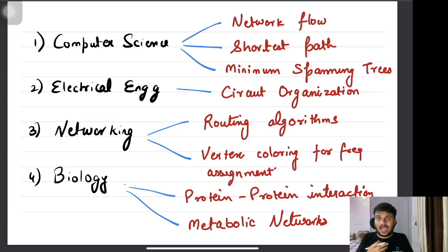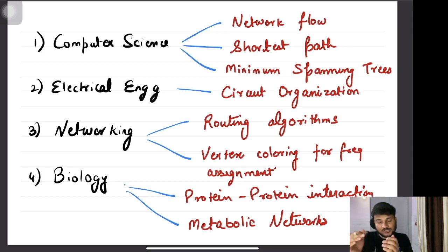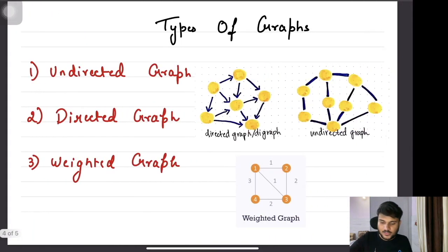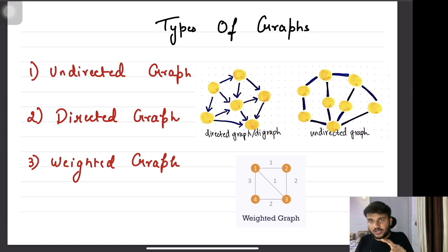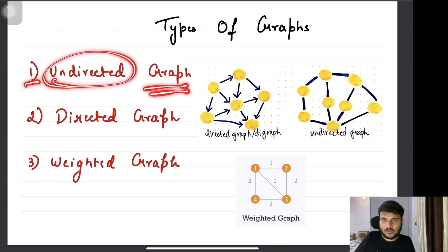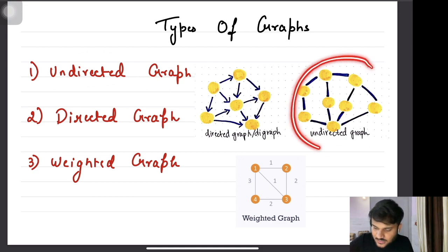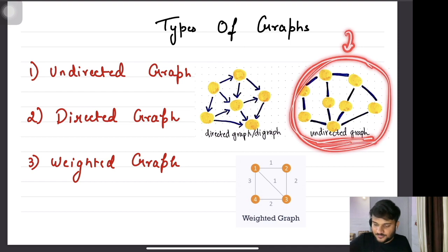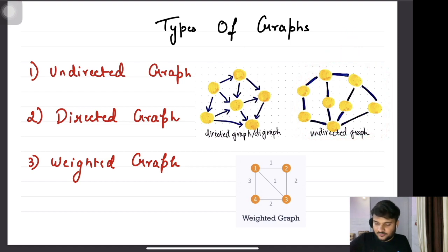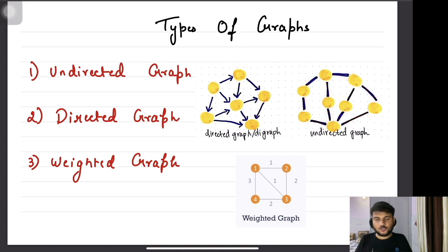Now let's talk about some different types of graphs, and then we will see some more applications based on those different types. Based on the nature of the edge you can define different types of graphs. The first type is the undirected graph. In an undirected graph, the edges do not have any direction.